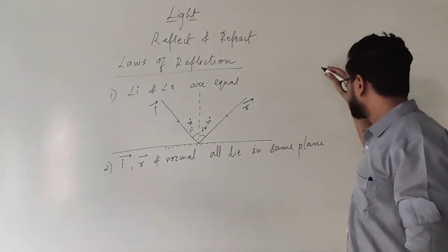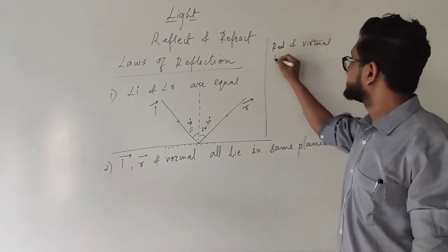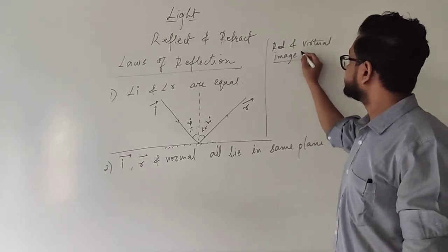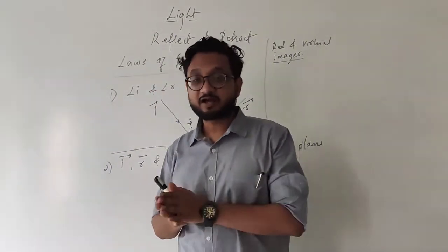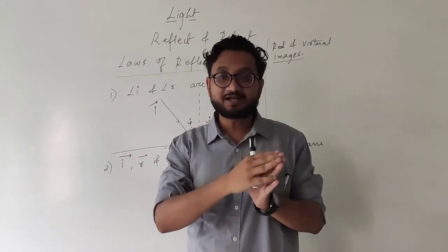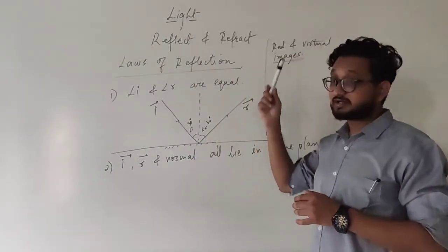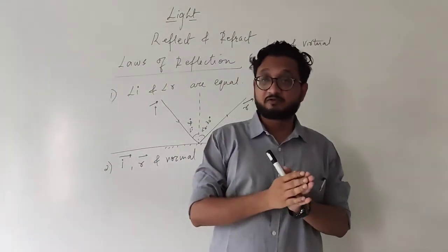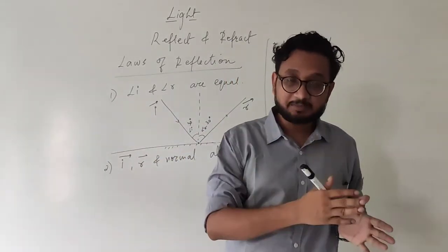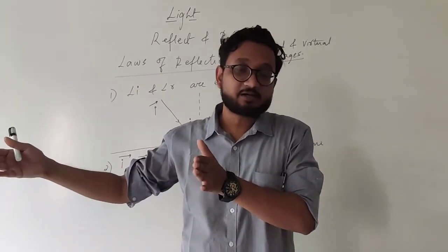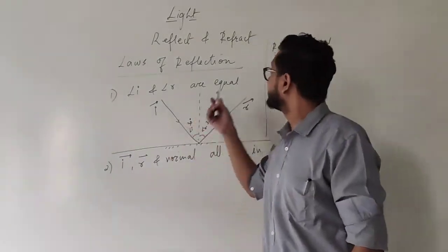We also studied about real and virtual images. Real images are formed when the incident rays of light, after reflecting off a surface, converge — that is, they meet at a particular point and cast an image there. Virtual images are formed inside a reflecting surface, where the rays seem to meet at a certain point but are not actually meeting in the real world.